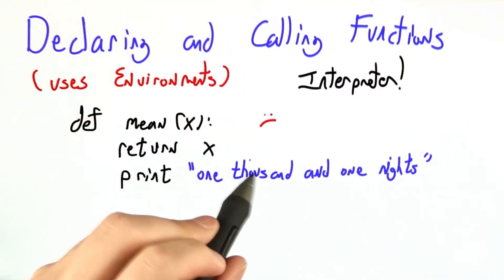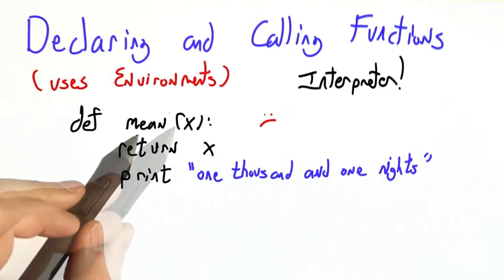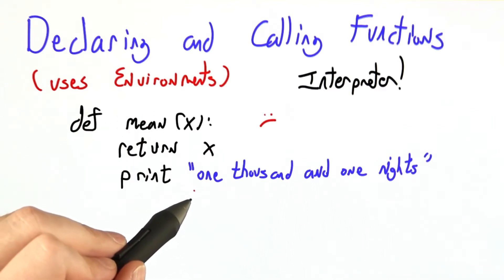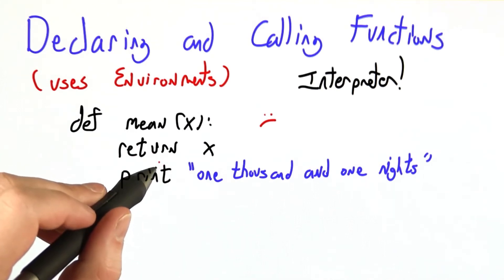For example, someone could be a little mean and give us a procedure like this to try to interpret. Mean of x immediately returns x but then after that it has written print 1001 nights. We should never actually print out 1001 nights from this function definition. We should return first.